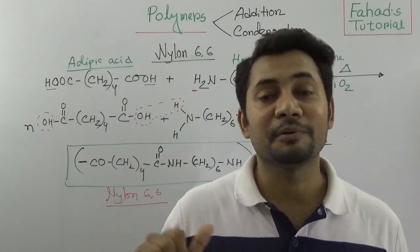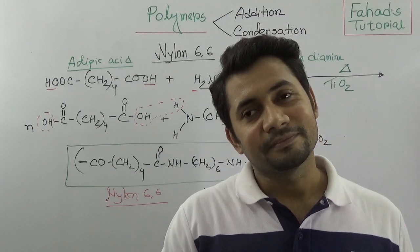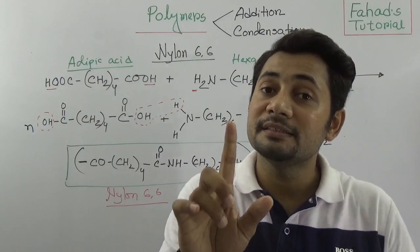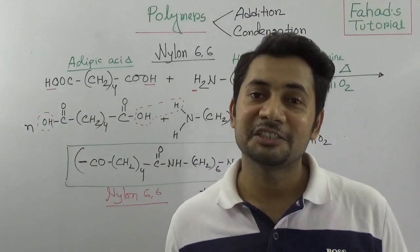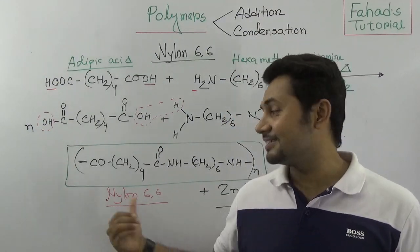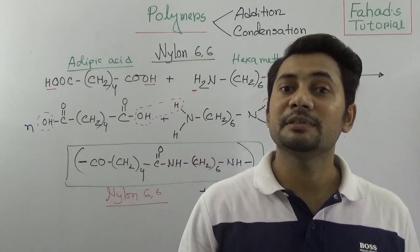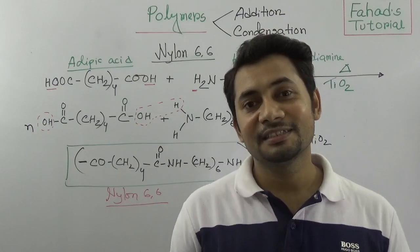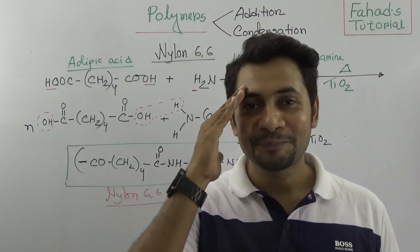In summary: based on structure we have addition polymer and condensation polymer; based on source we have natural polymer and synthetic polymer. Addition polymers — monomers add directly — give polythene, polypropene, and polyvinyl chloride. Nylon 6,6 is a condensation polymer formed from adipic acid and hexamethylenediamine. I hope you understand. Please write in the YouTube and Facebook comment sections if you have any trouble. Thank you very much — see you in the next tutorial. Bye.